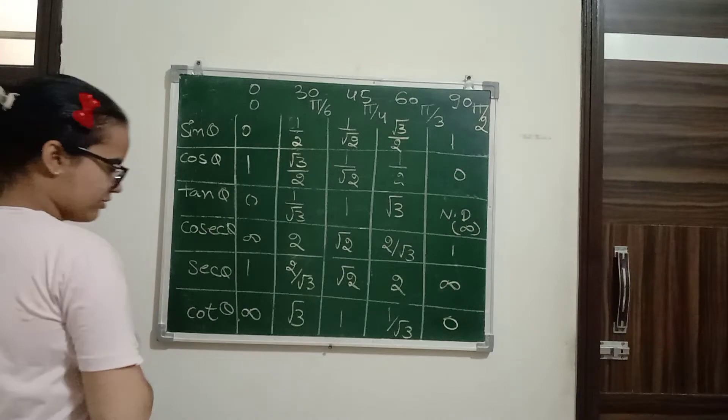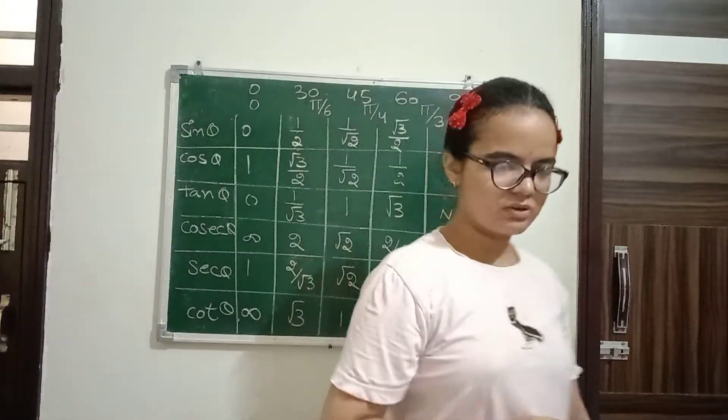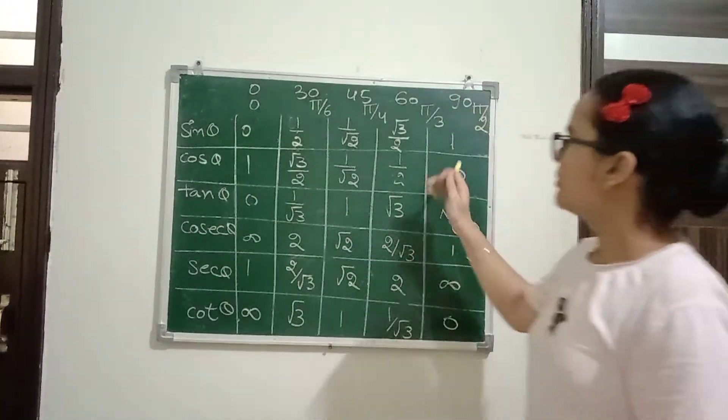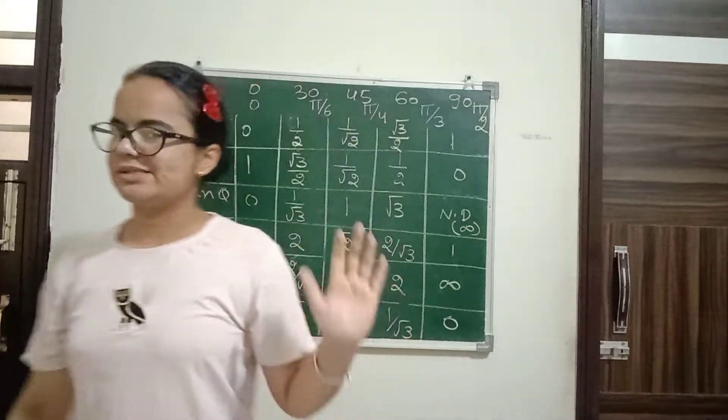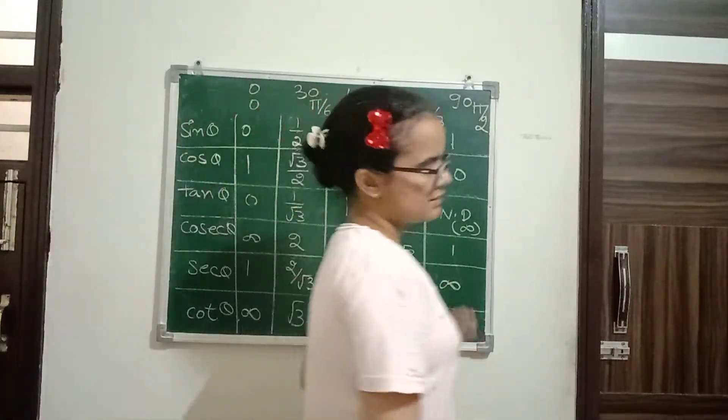We know in our six trigonometric functions: sin, cos, tan, sec, cosec, and cot. We have five angles: 0, 30, 45, 60, and 90 degrees.